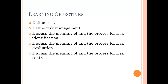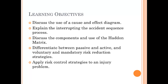The learning objectives: you should be able to define risk and risk management; discuss the meaning and process for risk identification, risk evaluation, and risk control; discuss the use of cause and effect diagrams; explain interrupting the accident sequence process; discuss the components of the Haddon matrix; differentiate between passive, active, voluntary, and mandatory risk reduction strategies; and apply risk control strategies to an injury problem in your department.